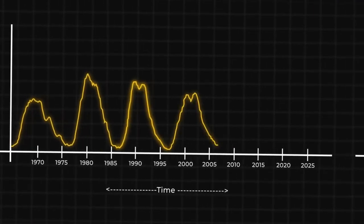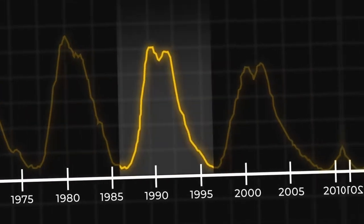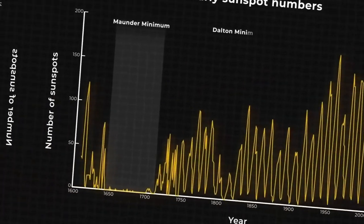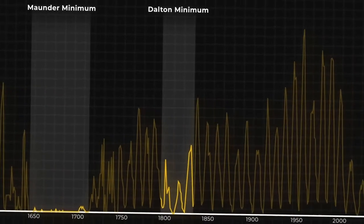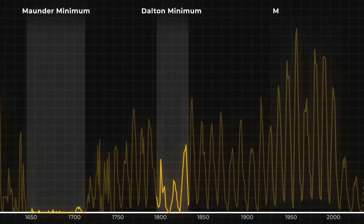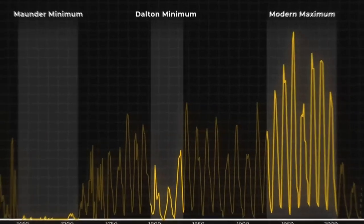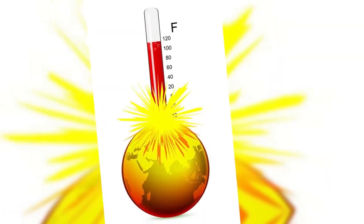Historically, there have been periods of unusually low solar activity, such as the Maunder minimum and the Dalton minimum, which coincided with cooler temperatures on Earth. Conversely, the modern maximum saw heightened solar activity and warmer temperatures.